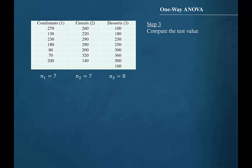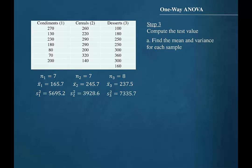The process of finding the test value consists of five steps. Step A: Find the mean and variance for each sample. Step B: Find the grand mean. The grand mean is found by dividing the sum of all data values by the sum of the sample sizes. So the grand mean for this hypothesis test is 217.3.